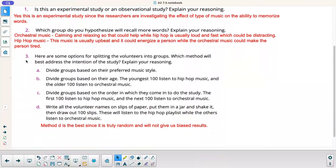So here are some options for splitting the volunteers into groups. Which method will best address the intention of the study? Option A, divide groups based on the preferred music style. I don't think that's a good random sample. You're going to get people that like classical. If we're trying to address the question of if a type of music helps people memorize words, you don't want to group them based on their preferred music. B, divide groups based on their age. Youngest hundreds listen to hip hop music and the older hundreds listen to orchestral music. Again, we're not doing a random sample there. So we could get skewed data.